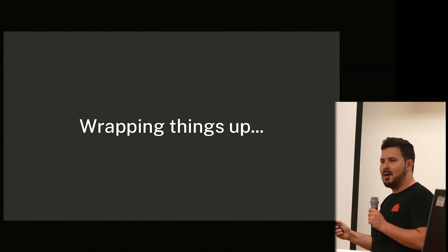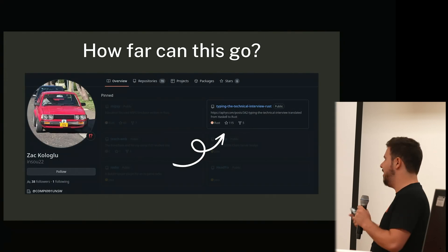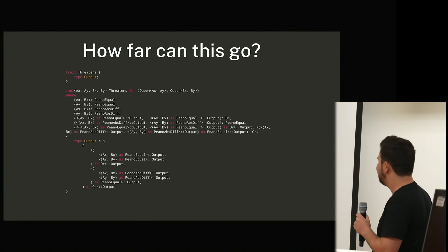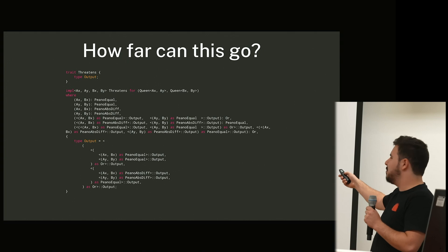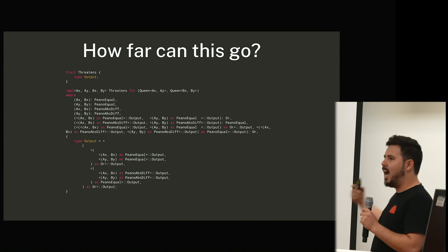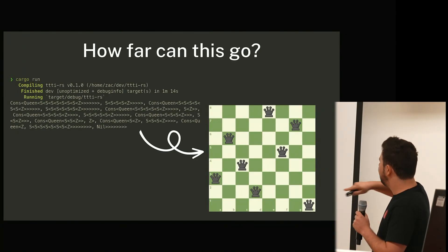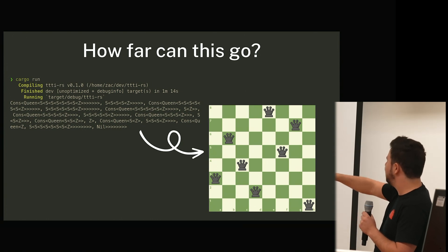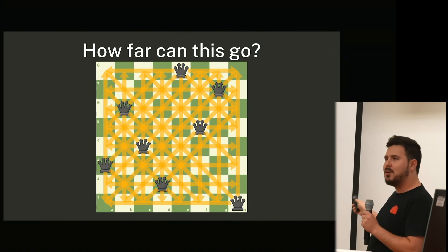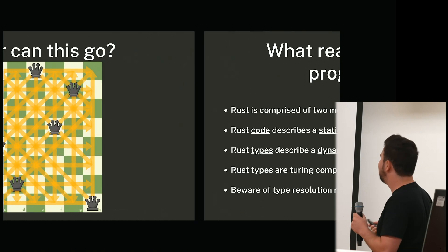To wrap things up — and I know it's been a little crazy — how far can this crazy idea go? If you go to my GitHub, at the front you'll see 'Typing the Technical Interview Rust.' This is my favorite implementation in the whole thing: it's trying to check if two queens on a chessboard can actually see each other in any of the different directions. When you run it, it'll spit out a chessboard of queens which are all placed, and you can see none of those queens can attack each other. It's the very famous algorithmic problem — N-Queens.